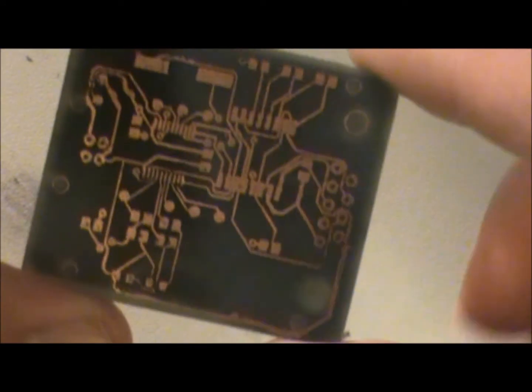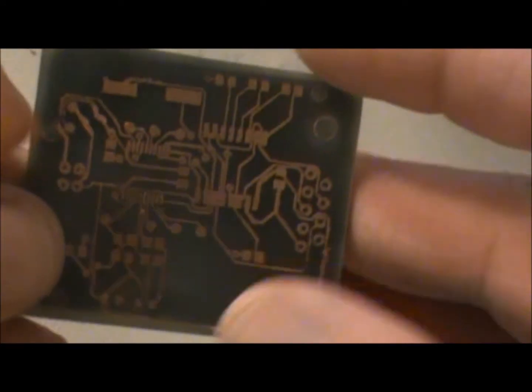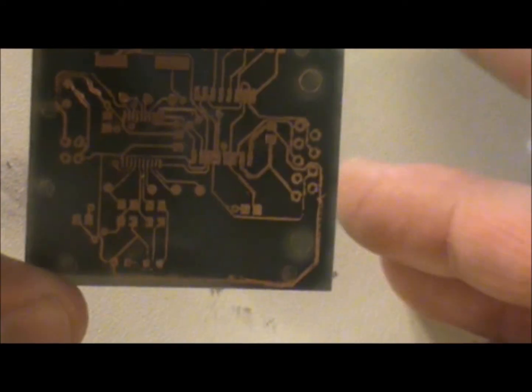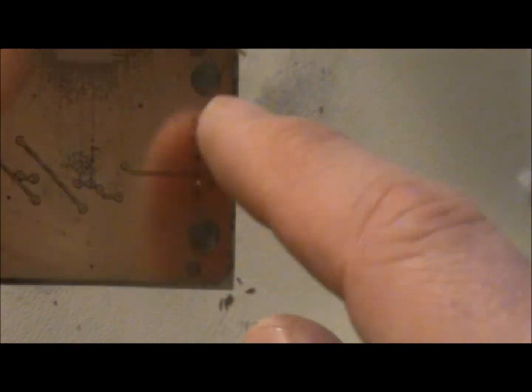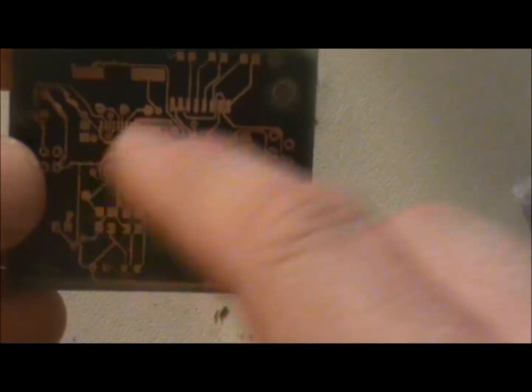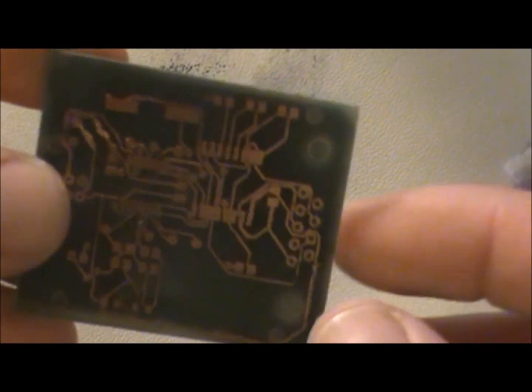So that's pretty much how it's done. I'll clean this up a little more, but that's pretty much how it's done. You have your own PCB. Next we'll have to drill all the holes - that'll be the next thing. We're going to have to drill all the holes, so that'll be next.